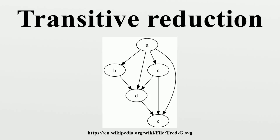To prove that transitive reduction is as hard as transitive closure, Aho et al. construct from a given directed acyclic graph G another graph H, in which each vertex of G is replaced by a path of three vertices, and each edge of G corresponds to an edge in H connecting the corresponding middle vertices of these paths. In addition, in the graph H, Aho et al. add an edge from every path start to every path end. In the transitive reduction of H, there is an edge from the path start for U to the path end for V if and only if edge UV does not belong to the transitive closure of G. Therefore, if the transitive reduction of H can be computed efficiently, the transitive closure of G can be read off directly from it.